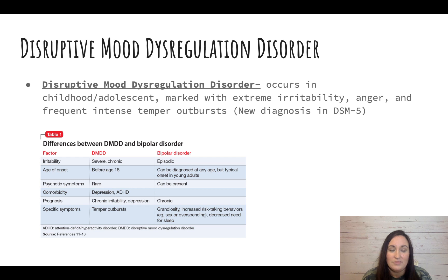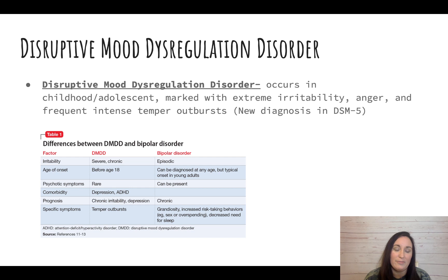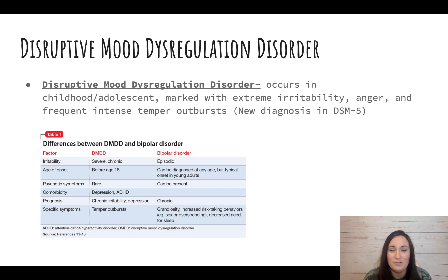There's something called disruptive mood dysregulation disorder, or DMDD. This is a new diagnosis in the DSM-5, which came out in 2013. So many children and young people were being diagnosed with bipolar and given medication that they felt there was something unique about childhood and adolescence enough to give it a separate label. DMDD occurs in childhood and adolescence and is marked by extreme irritability, anger, and frequent intense temper outbursts. You can look at the chart to see some differences between DMDD and bipolar.